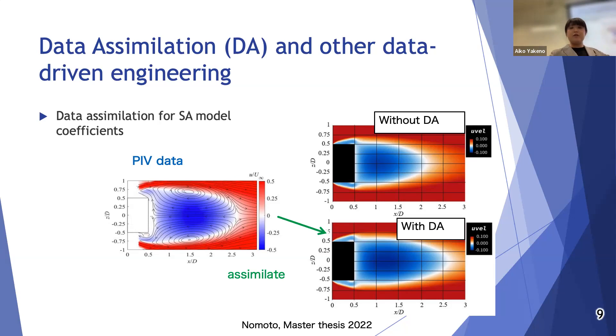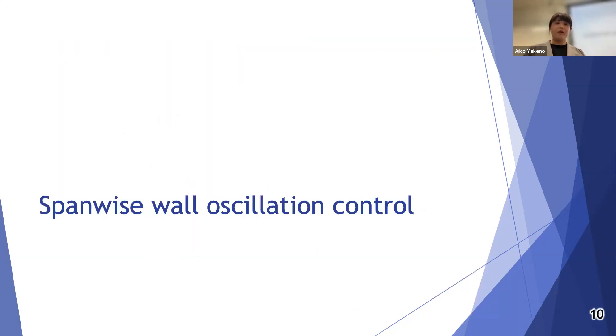This figure shows results: the time-averaged streamwise velocity without tuning by data assimilation, and the reverse figure shows that with parameter tuning by data assimilation. Some characteristics are not reproduced, but this is because of the limitation of the SA model. Now I will move to the topic of the spanwise wall oscillation control.